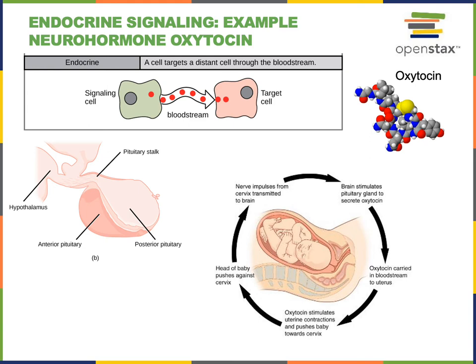Neurohormones are water soluble hormones made from amino acids, and most neurohormones are polypeptides. One example of a neurohormone is oxytocin. Oxytocin is produced by neurons in the hypothalamus that secrete oxytocin from the posterior pituitary. Oxytocin then travels through the bloodstream to reach target cells in the uterus, where it stimulates contraction of the smooth muscle.